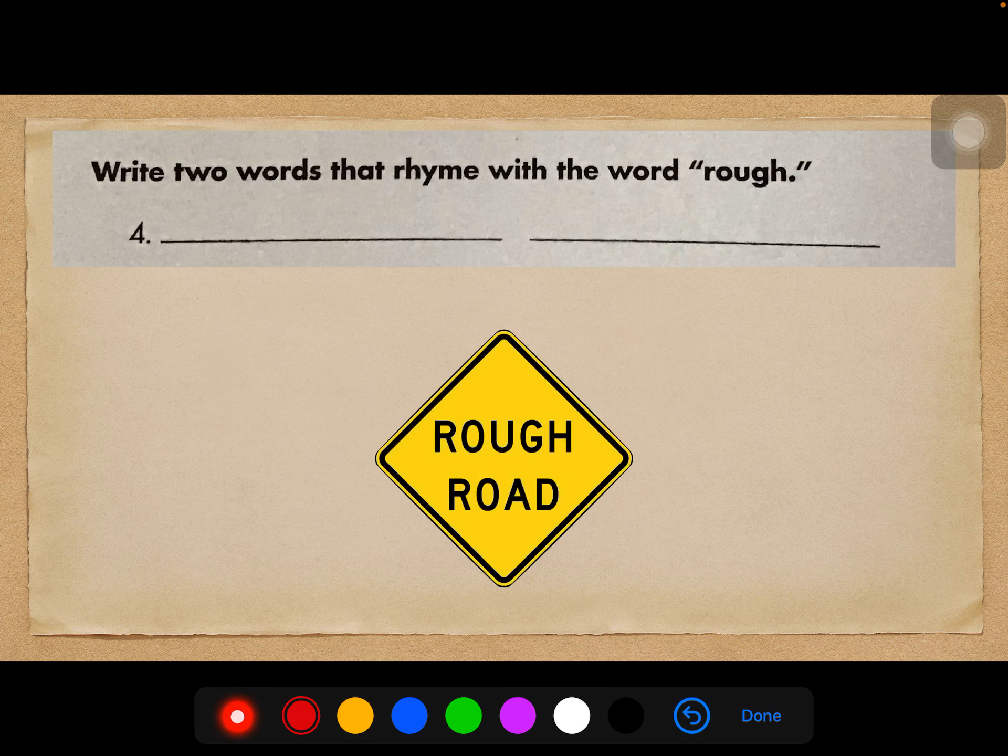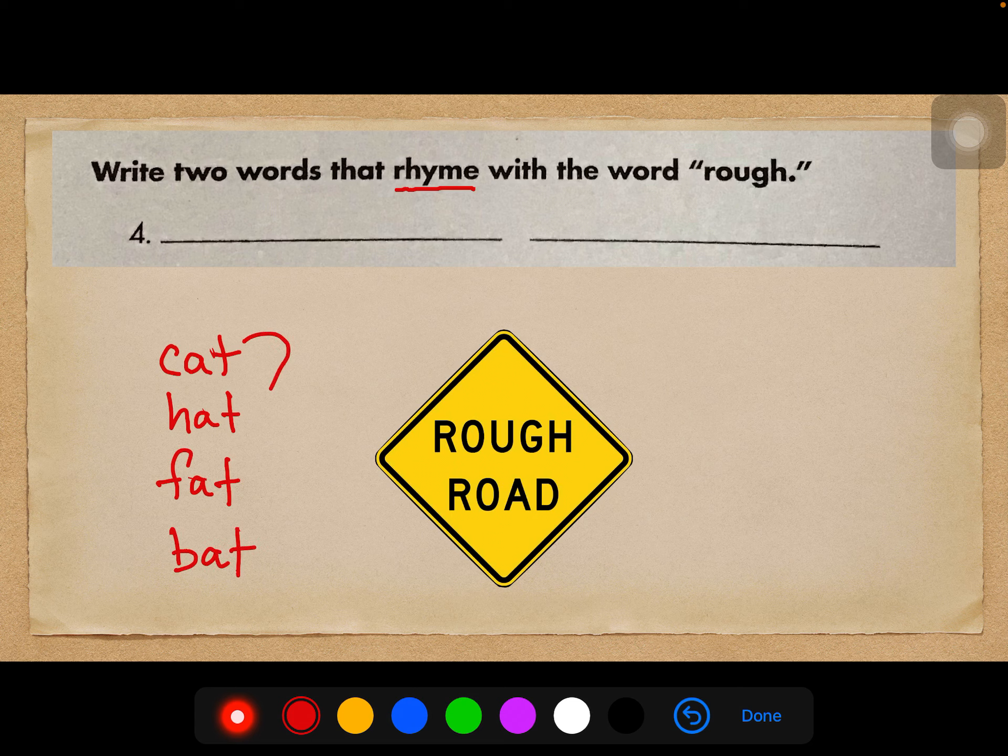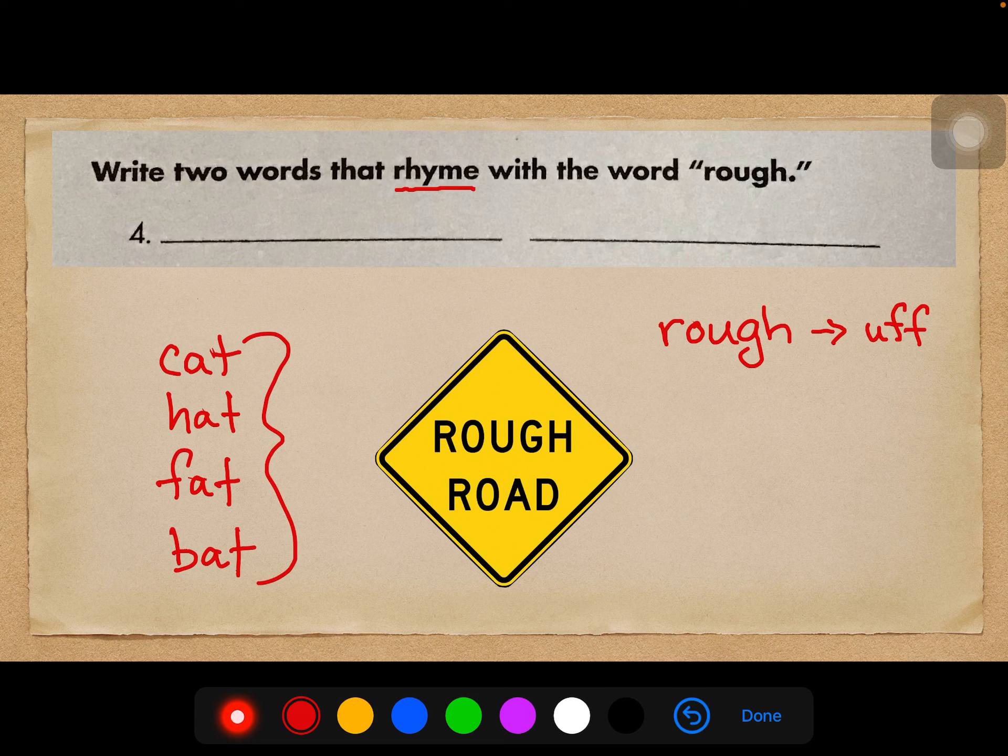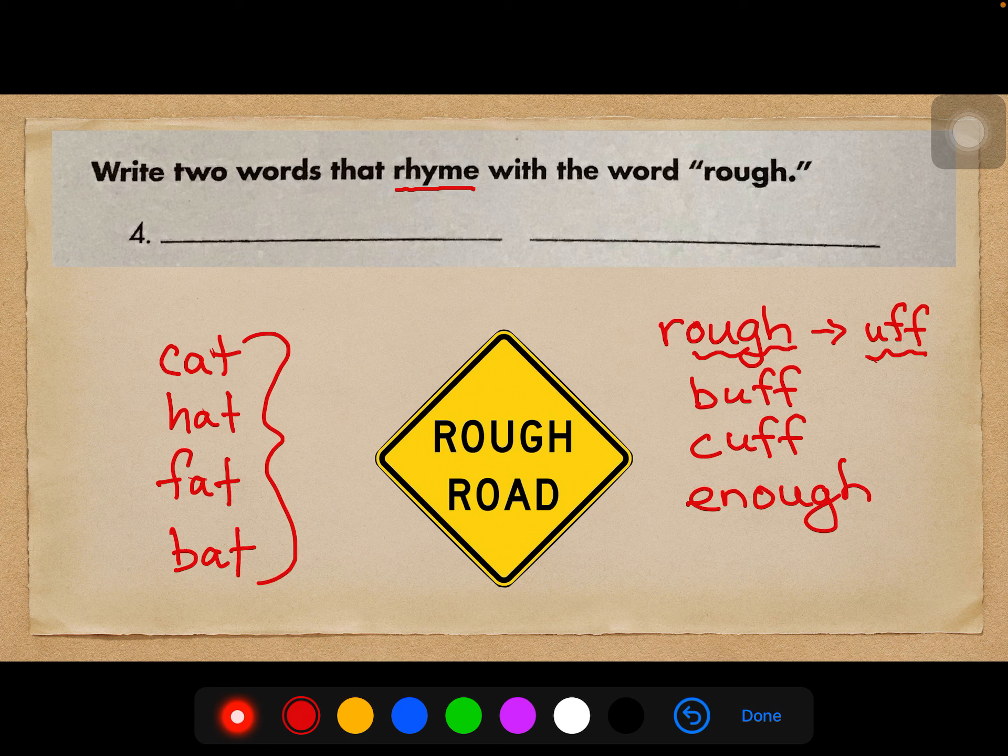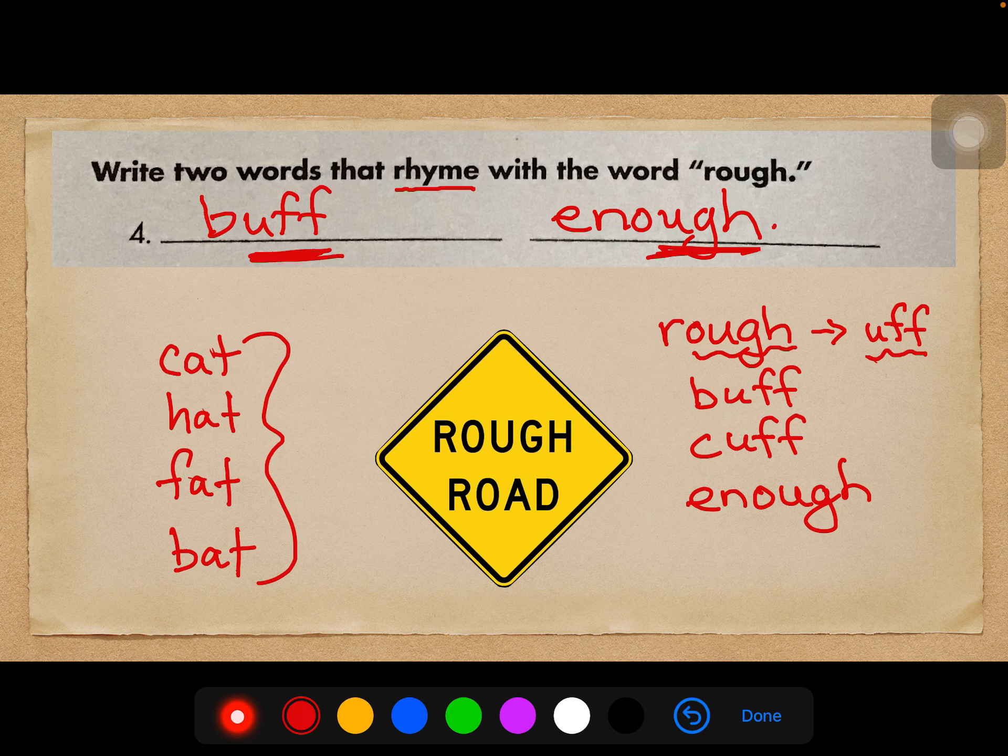Number four, write two words that rhyme with the word rough. Rhyme means the ending sounds the same. So like cat, hat, fat, bat. Those are all rhyming words. So with the word rough, the end sounds like this. So I might take this spelling or this spelling because the sound is the same. So I could say rough, buff, cuff, enough. Okay, and I'm sure there are other words. I'm just going to put two different spellings. Buff and enough. Because in English, these two sound the same.